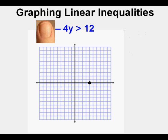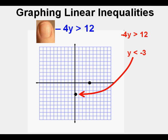We solve for the y-intercept by covering up the x term. What's left is negative 4y is greater than 12. But when we solve an inequality by dividing by a negative number, we have to change the direction of the sign, so it becomes y is less than negative 3. Now we draw in a point at the y-intercept of negative 3. With both intercepts drawn, we're ready to draw the boundary line.